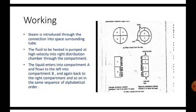Working: Steam is introduced through the connection space into surrounding tubes. Steam is introduced from the steam inlet. Then the fluid to be heated is pumped at high velocity into right distribution chamber through the compartment. The fluid is entered at high velocity in compartment A. The liquid enters into compartment A and flows into compartment B and again back to the right compartment and so on in the same sequence of alphabetical order.